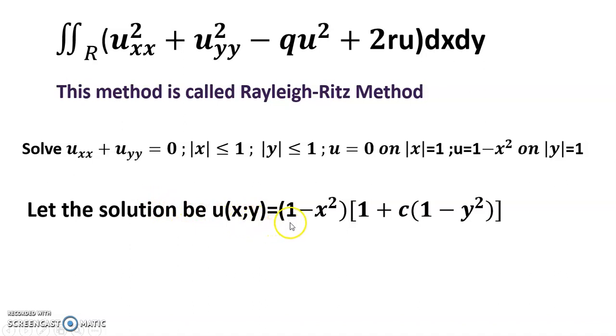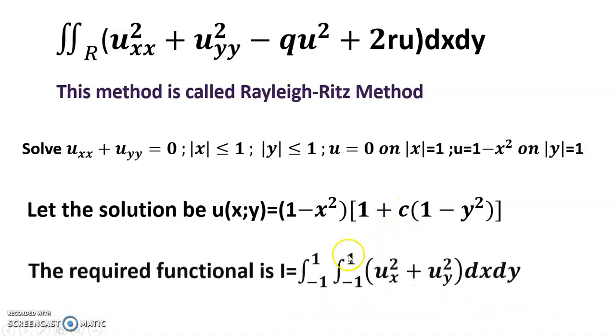This is the property of the Rayleigh-Ritz method. I have to find out c, where c is any constant term. So the required functional...